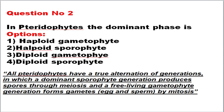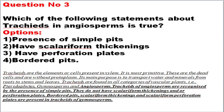The next question asks which statement about tracheids in angiosperms is true. Tracheids are a type of cell found in the xylem, and they are generally primitive and dead cells since they don't have any protoplasm. Their function is to transport water as well as minerals from the roots to stem and leaves. Tracheids are found in all categories of vascular plants — gymnosperm, angiosperm, and pteridophytes — and the structure of tracheids varies between angiosperms and gymnosperms.